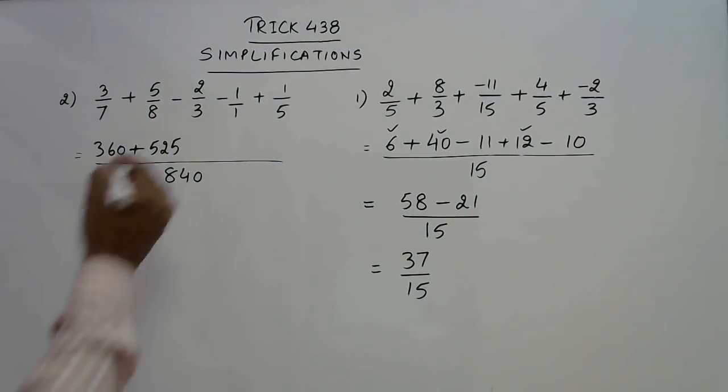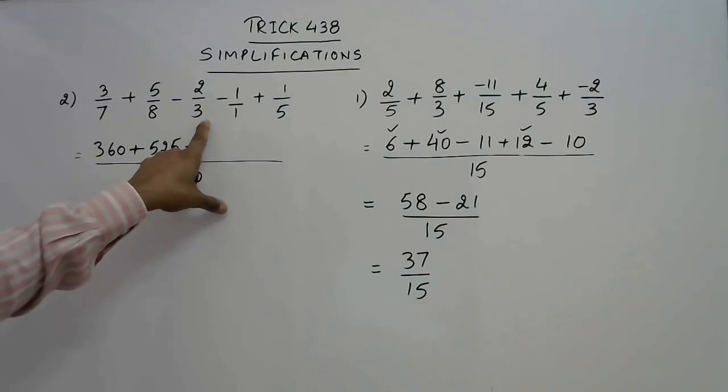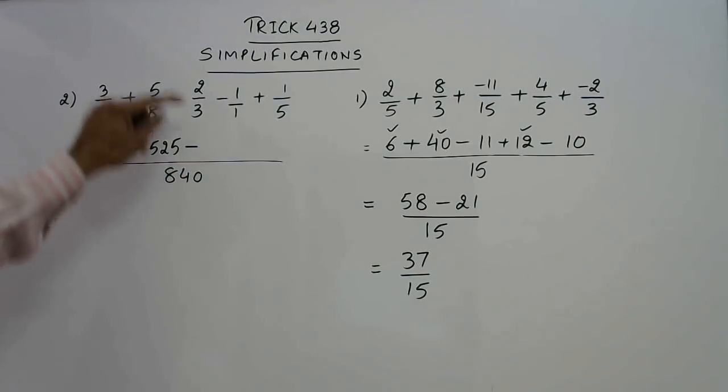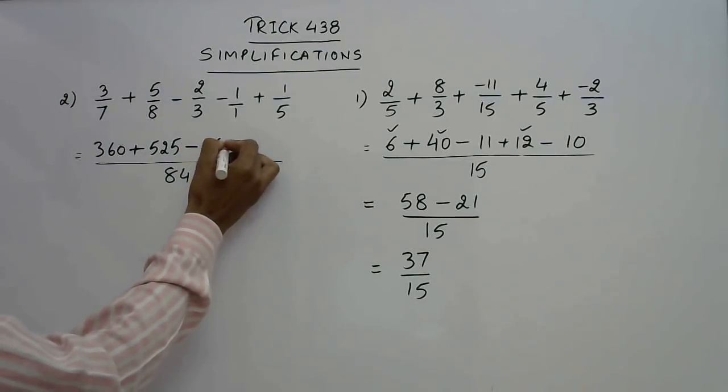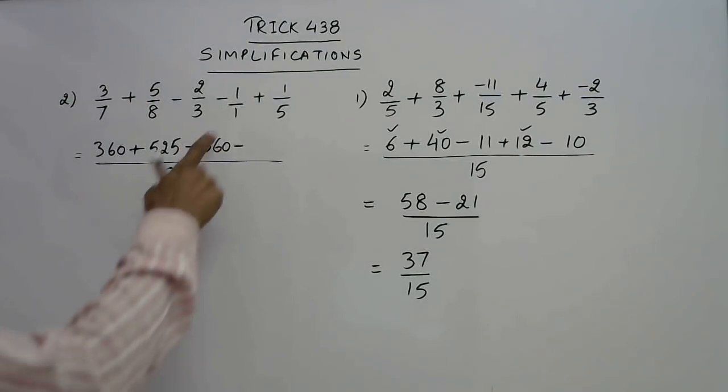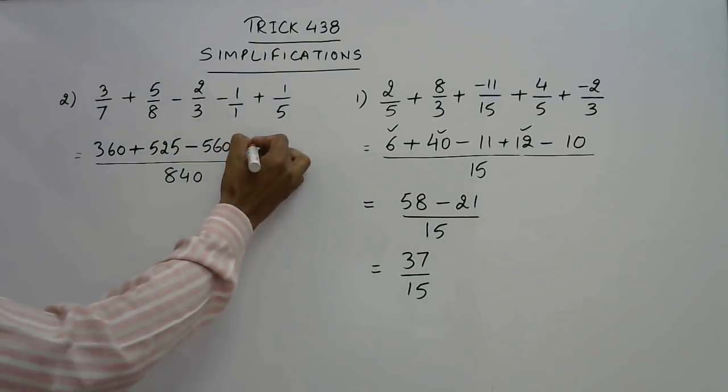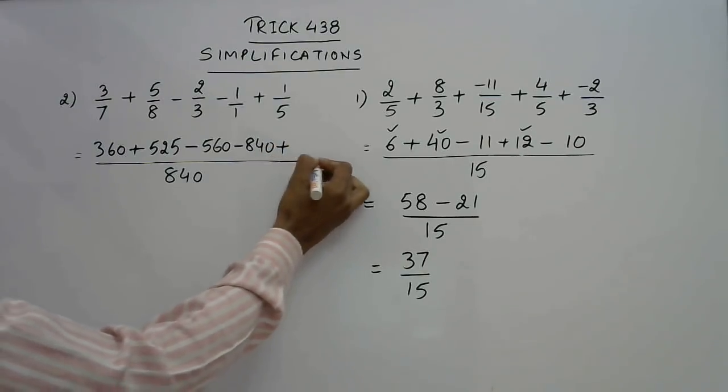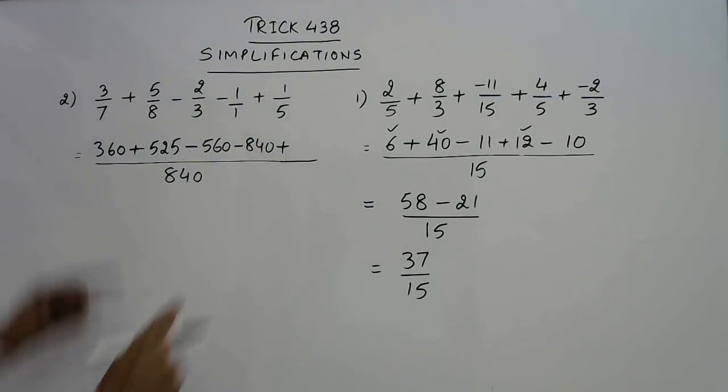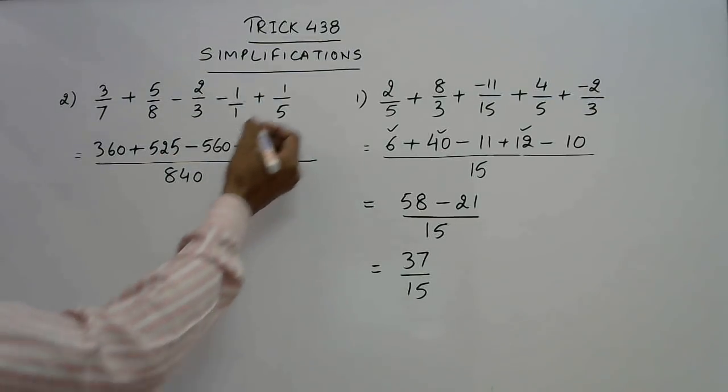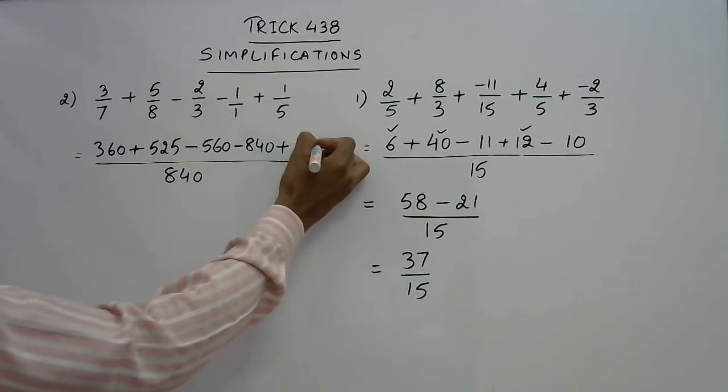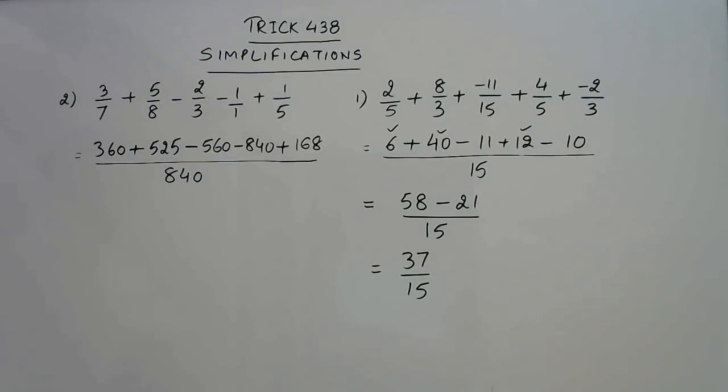Now we have a negative sign and now 840 is to be divided by 3. So 280 into 2 that is 560 minus minus and since this is 1. So 840 will come as it is in the numerator and finally we have plus. So we need to divide 840 by 5 or you can multiply these 3 numbers that will be the numerator. So I will divide 840 by 5, 840 by 5 and get 168. So that is the numerator.